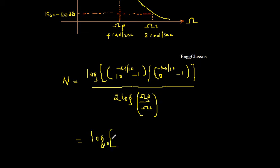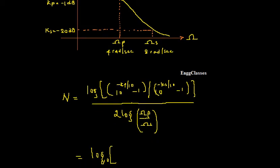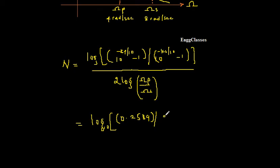Log is always with respect to base 10 here. In the numerator: 10 to the power of minus Kp by 10 — Kp is minus 1, so minus of minus becomes plus 1 by 10, which is 0.1. So 10 to the power 0.1 is 1.2589, minus 1 gives 0.2589. In the denominator: Ks is minus 20, so minus of minus becomes plus 20 divided by 10, giving 2. So 10 squared is 100, and 100 minus 1 is 99.